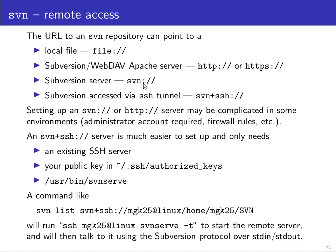By far the most popular way of using Subversion is tunneled on top of SSH. There you use the SVN protocol inside the standard input/standard output tunnel that Secure Shell offers. To set up a repository like this, all you need is an existing server where you can SSH into.